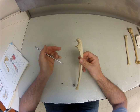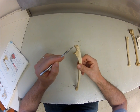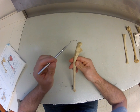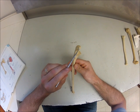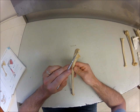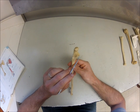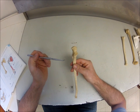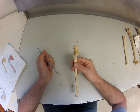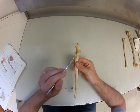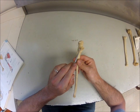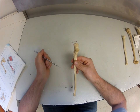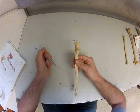Moving down to the ulna — one of the telltale signs is the C-shaped proximal end. The two processes sticking off here are the olecranon process and the coronoid process. In between those is the trochlear notch, which is what's going to articulate with the trochlear surface of the humerus. Over here, this little groove is the radial notch, where the radius articulates with the ulna when we pronate and supinate.